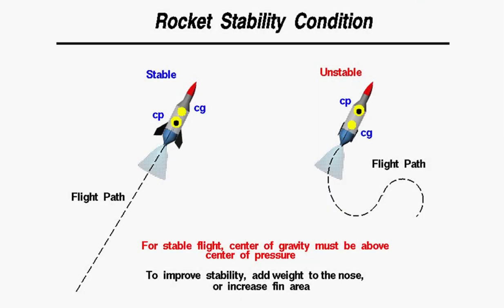Coming on to the stability criterion: now that you know about the CG and CP points, for a rocket to be stable, the CP or center of pressure must be behind the center of gravity. If they intersect, or if the CP is ahead of the CG, it leads to an unstable rocket. If your rocket has the center of pressure ahead of the center of gravity, how do you make it stable? Leave your answers in the comments — we will address this in further videos.